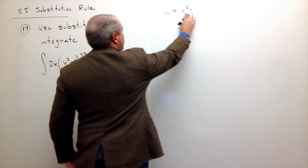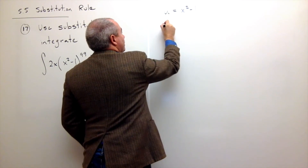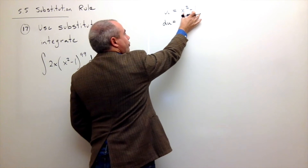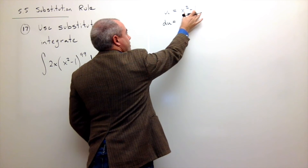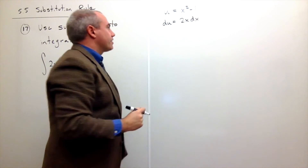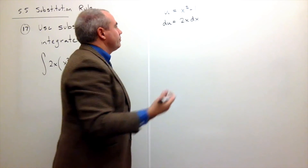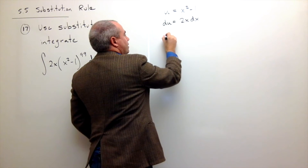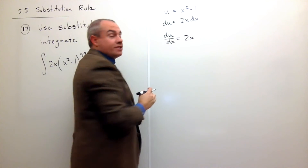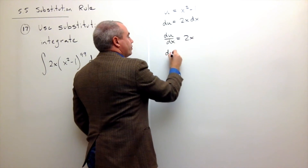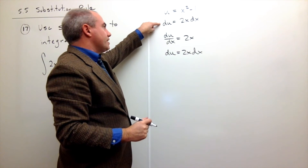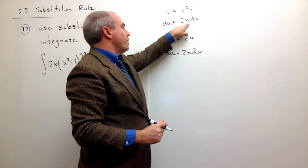Now that we have U, we can find du. du is the derivative of x squared minus 1 with respect to x, which is 2x, and we add on a dx. Another way to think about it: du/dx equals 2x, so multiplying both sides by dx gives du = 2x dx. Typically we skip the intermediate step and write directly that du equals 2x dx.